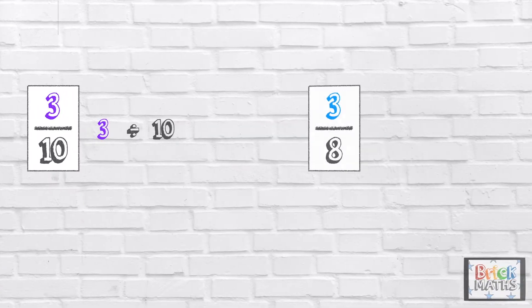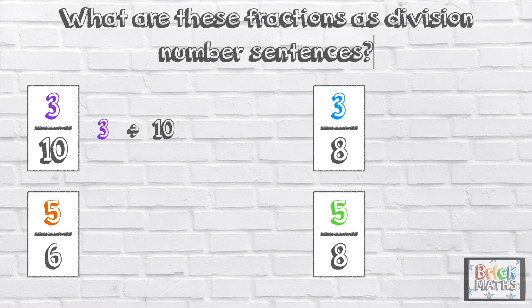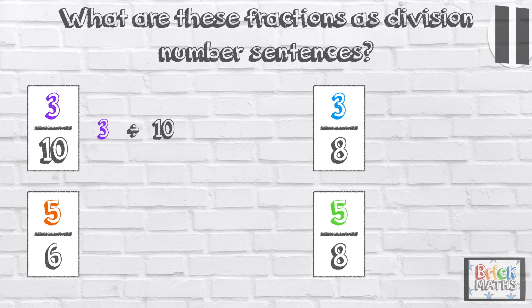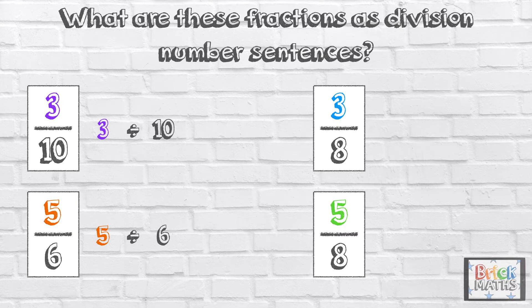What are these fractions as division number sentences? Pause the video to give you time to work out the answer. Press play when you're done. So 5 sixths is 5 divided by 6. 3 eighths is 3 divided by 8. 5 eighths is 5 divided by 8.